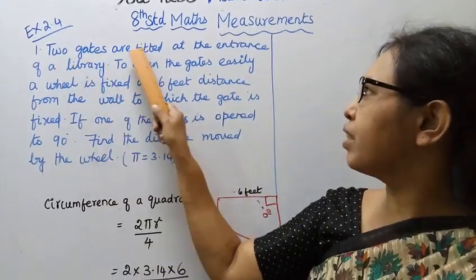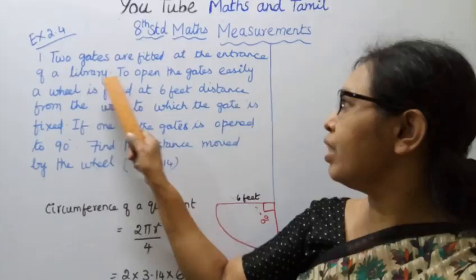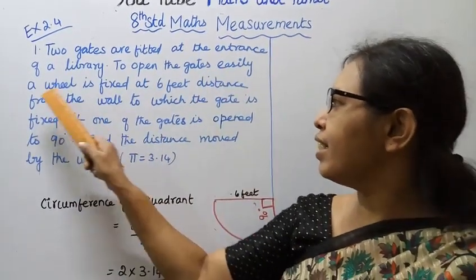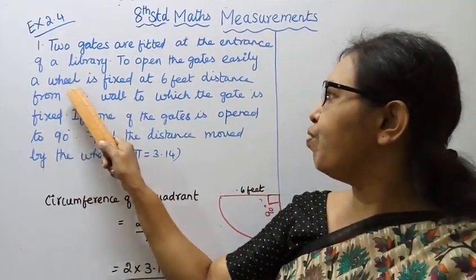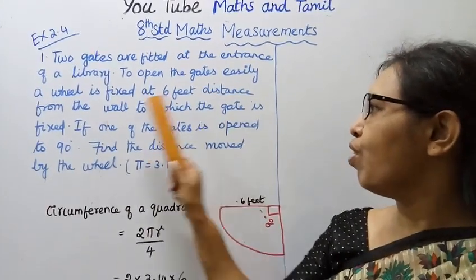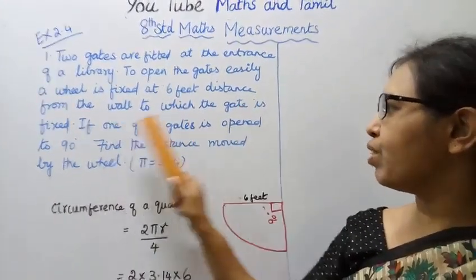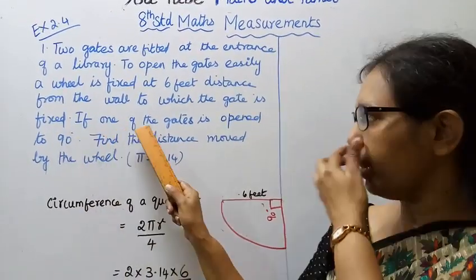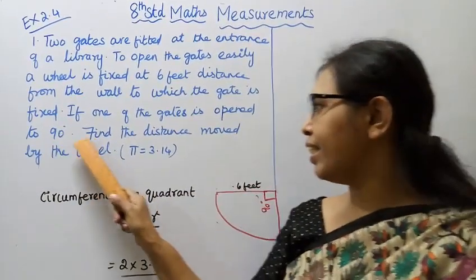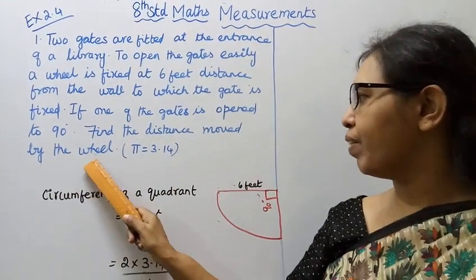Two gates are fitted at the entrance of a library. To open the gates easily, a wheel is fixed at 6 feet distance from the wall to which the gate is fixed. If one of the gates is open to 90 degrees, find the distance moved by the wheel.